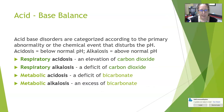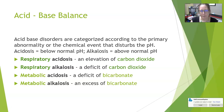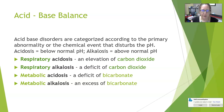Acid-base disorders are characterized according to the primary abnormality or chemical event that disturbs the pH. Acidosis is a below-normal pH, or a pH less than 7.4, and alkalosis is an above-normal pH, or a pH above 7.4. These can be further classified as either respiratory or metabolic.